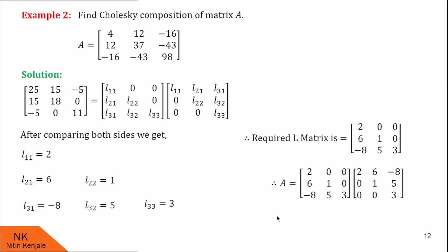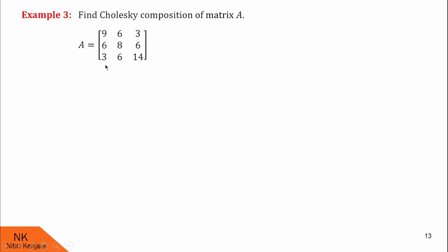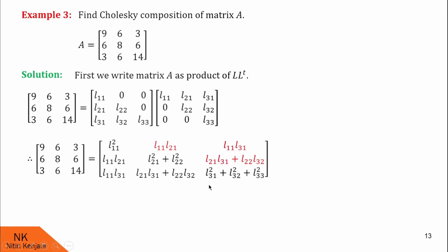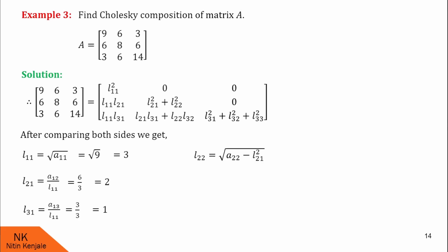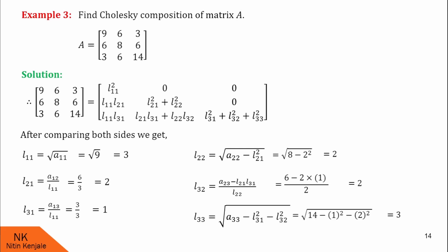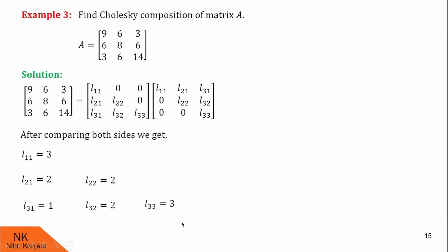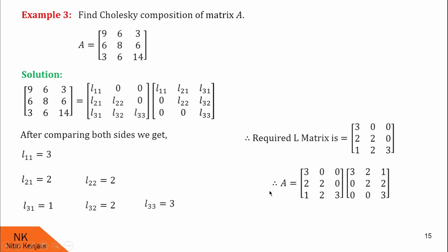We will see one more example of similar type. This is the given matrix A whose Cholesky decomposition we have to find. First write matrix A as L into L-transpose, then find the product of L and L-transpose. After comparing both sides: L11 = √9 = 3, L21 = 6 / 3 = 2, L31 = 1, L22 = 2, L32 = 2, and L33 = 3. After this we write the required matrix L using these values. You can easily find L-transpose and write A as L into L-transpose.